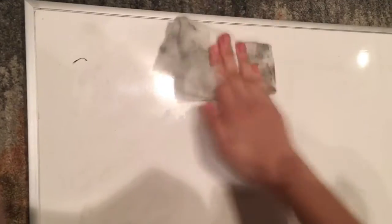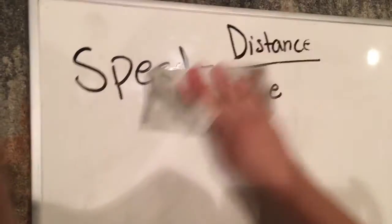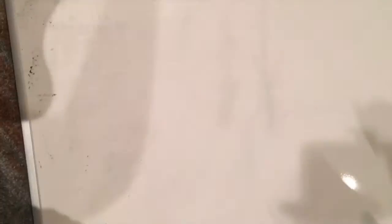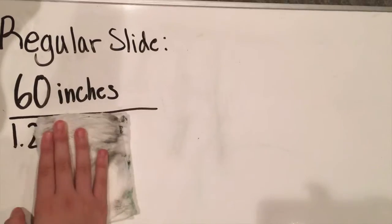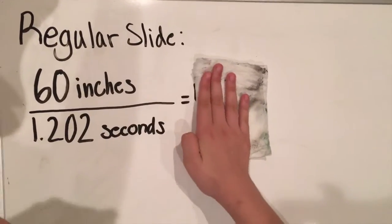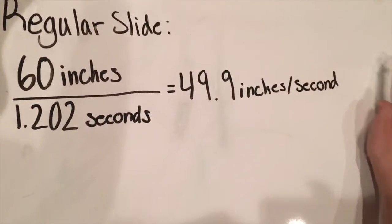Speed is the rate at which something is able to move or operate, shown by distance over time. The greater the speed of the slide, the faster you go, and the more fun you have. The equations that show this are 60 divided by 1.202 equals 49.9 inches per second. That was for the regular slide.